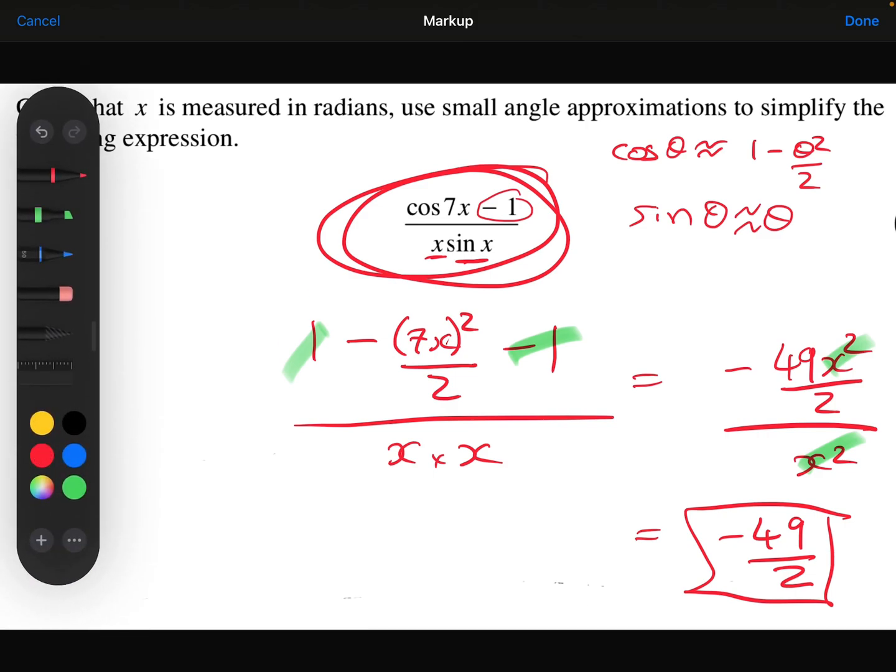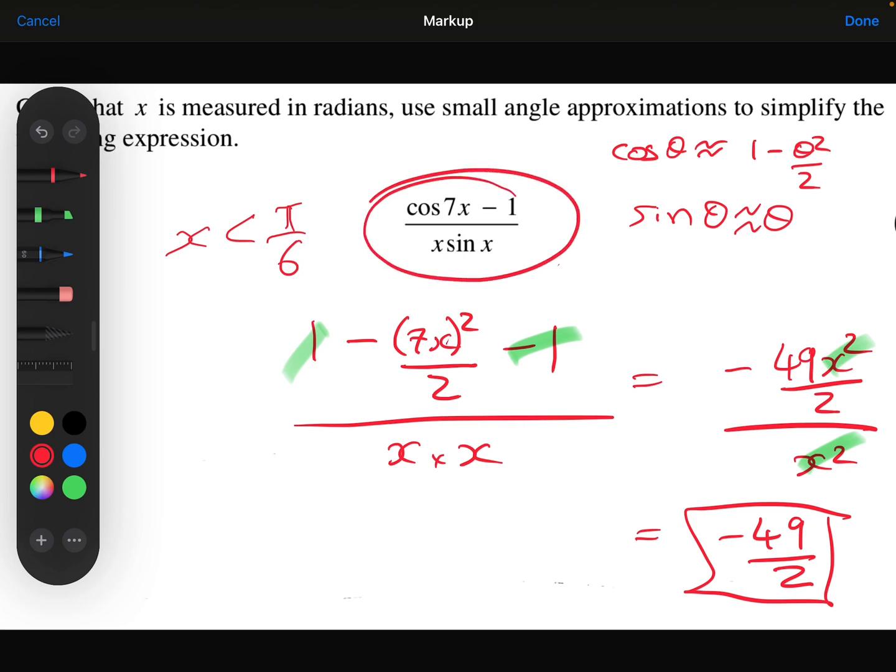Which is useful, because it means that instead of, if the angle is small, so if x in this case, if that is less than π over 6, then I don't need to worry about all this awkward expression. I know what it is. I know it's going to be roughly equal to minus 49 over 2. So that's the idea of the small angle approximations.